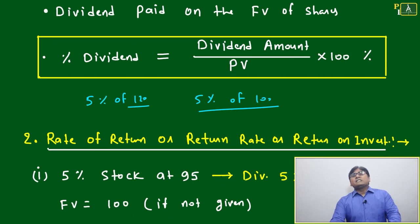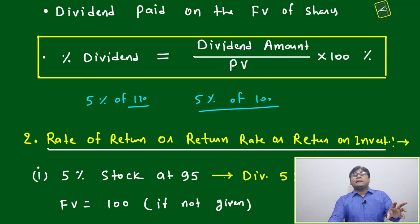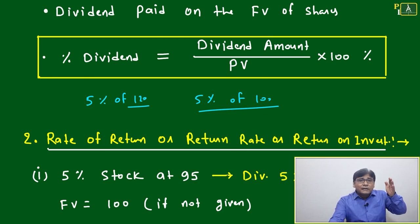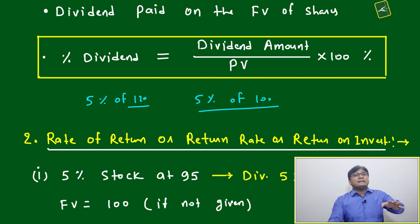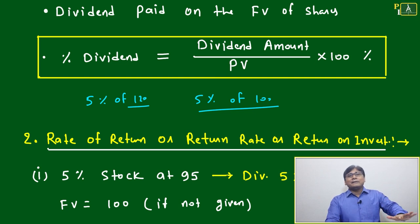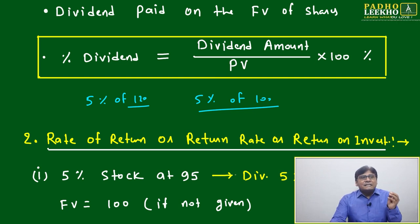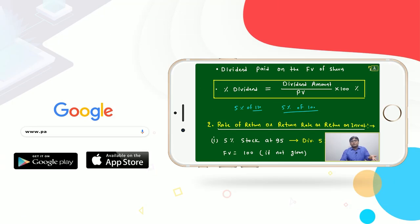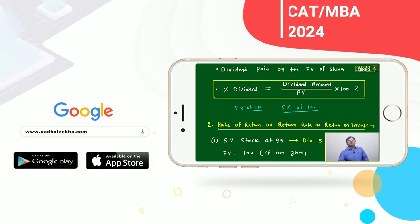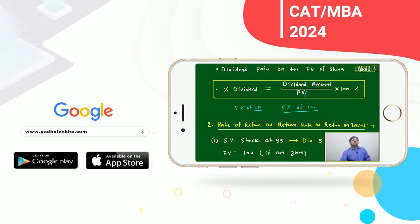Whatever dividend you get, you will get a certain fixed amount per share from the company. Whether the share value goes down or goes up, that is irrelevant. A certain percentage you will get because the company is in profit. The formula is: Percentage Dividend = Dividend Amount divided by Face Value (or Par Value).